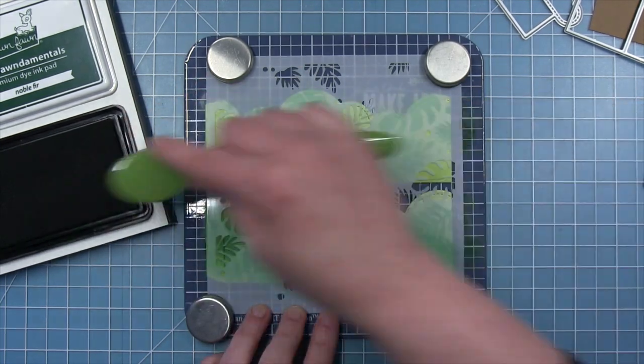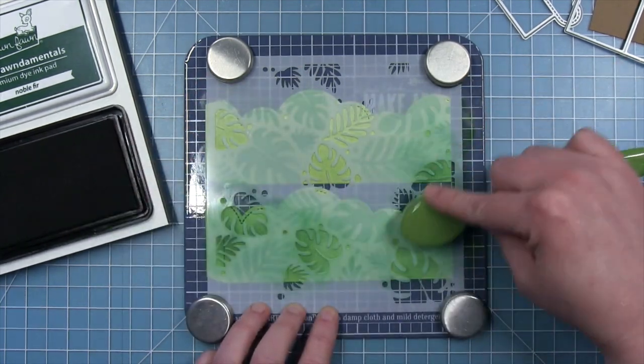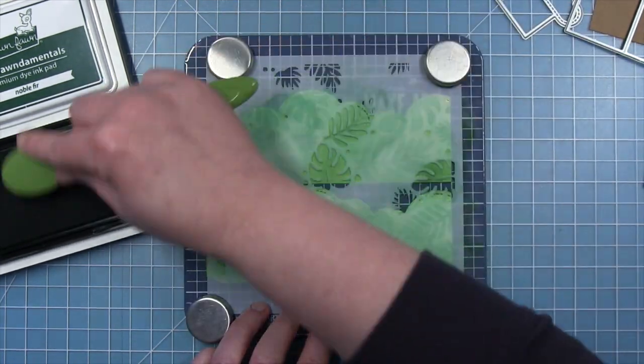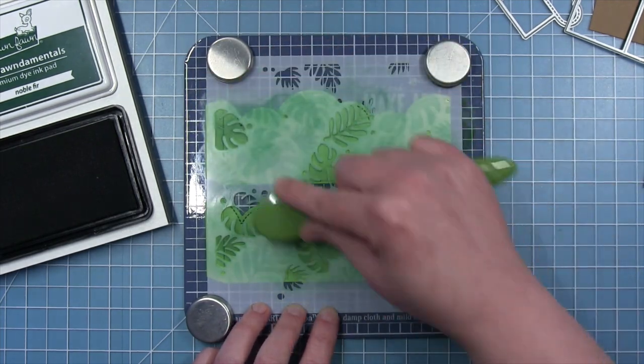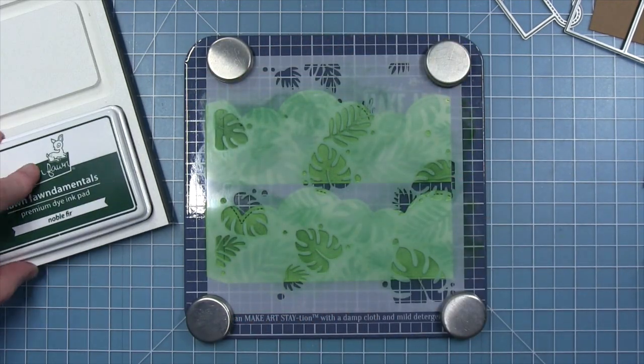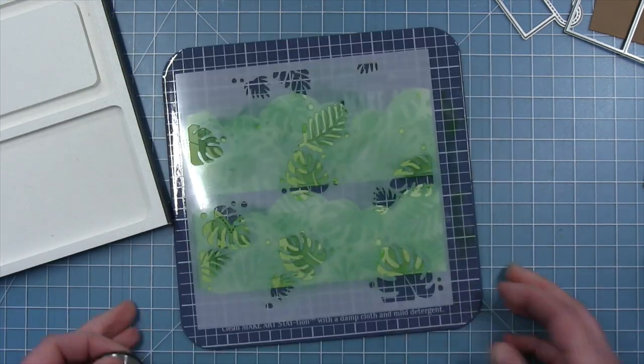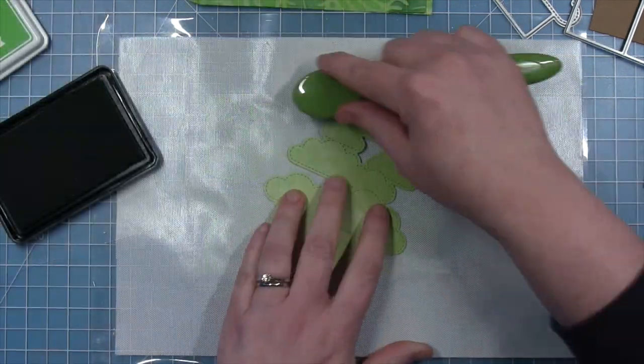I did pick the stencil with more leaves for my lighter color, so that my darker leaves were a little bit fewer and further between. And now that I have inked all those up, I can pull my stencil away, and we get this really cool reveal of those leaves on the green.